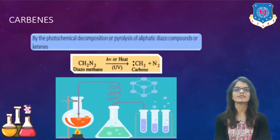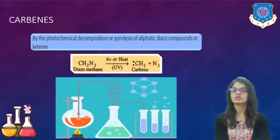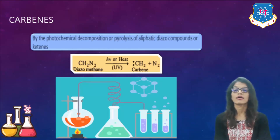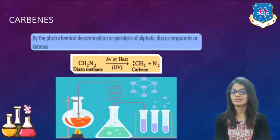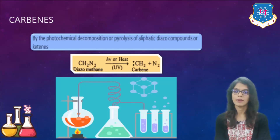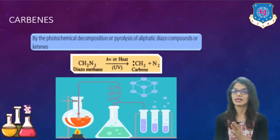Next, carbenes generally form by the photochemical decomposition or pyrolysis of aliphatic diazo compounds or ketenes. For example, diazomethane, when irradiated with UV radiation or heat, forms CH2 — which has one electron pair on itself — plus N2. The CH2 which contains two electrons on itself is known as carbene.